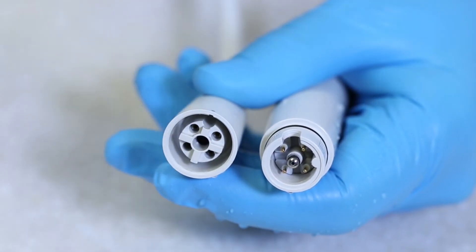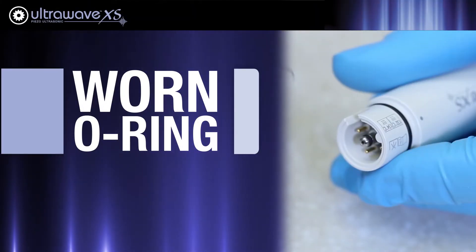Another possible cause is a worn O-ring on the handpiece. To replace the O-ring, refer to your handpiece instructions section 7.1.5 for a step-by-step guide for using the F12304 seal replacement kit.